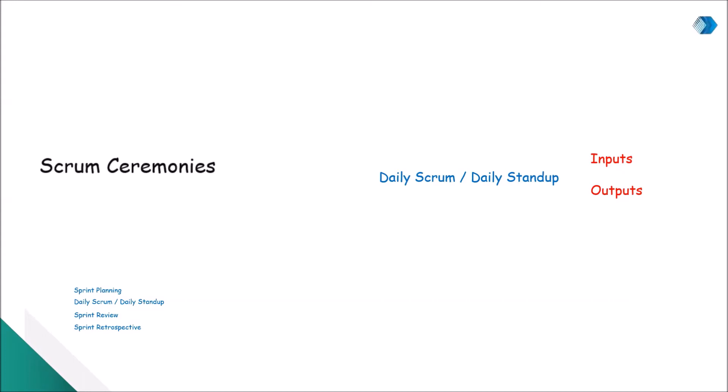Every team member is supposed to speak for two to three minutes on three basic questions: One, what was done by the team member in the last 24 hours to meet the Sprint goal? Two, what is the plan for today? And three, are there any impediments in the progress of meeting the Sprint goal? Ideally, this meeting is held for no more than 15 minutes. The Development Team is required to attend. For any impediments reported, it is the Scrum Master's responsibility to help the team member resolve the issue.